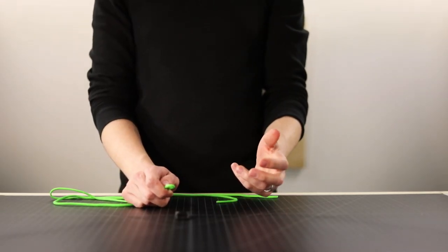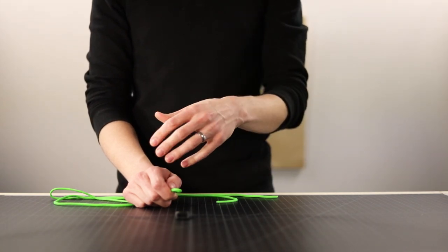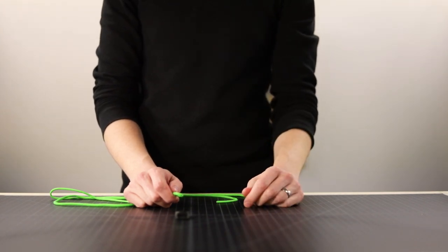So this first knot falls under the friction hitch category. It's a halfway point between a cow's hitch and a prusik knot. It's one more pass than a cow's hitch, one less than a typical prusik knot.